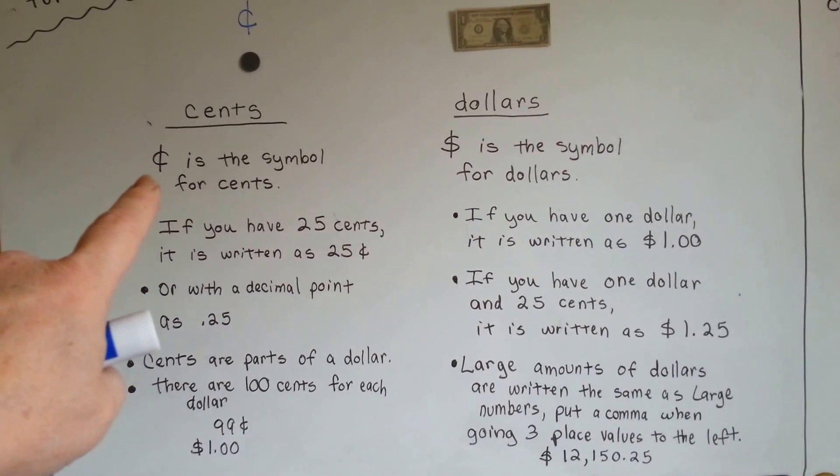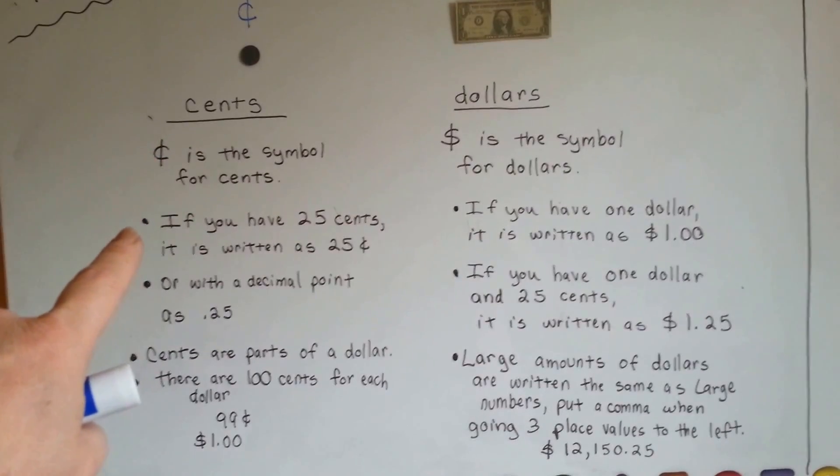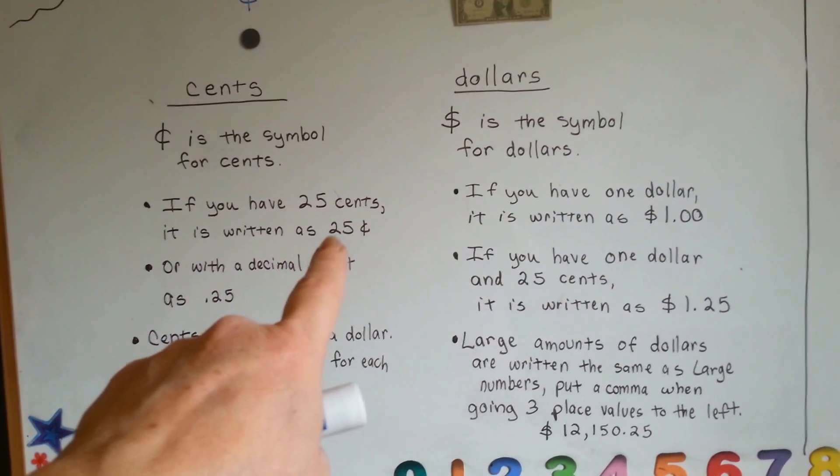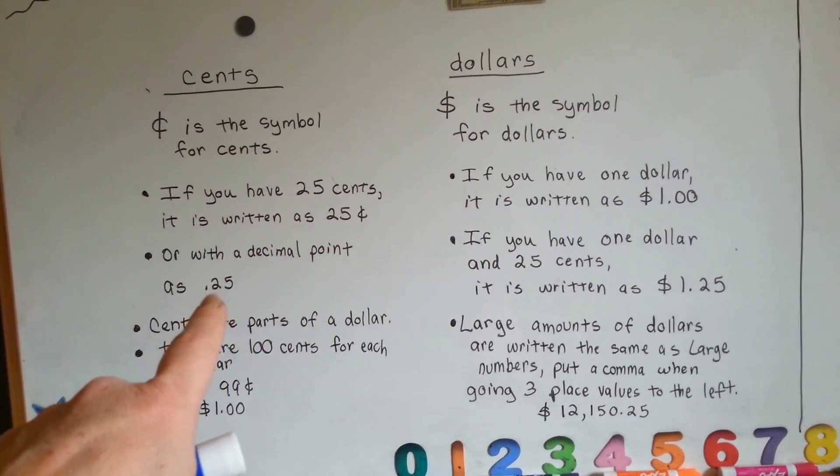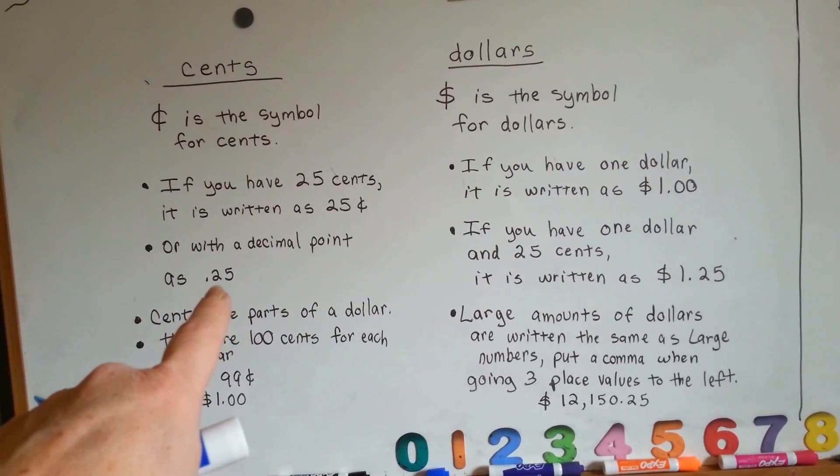This is the symbol for cents. It's a C with a line through it. And if you have 25 cents, like this quarter, it is written as 25¢. You can also write it with a decimal point, .25, to mean 25 cents.